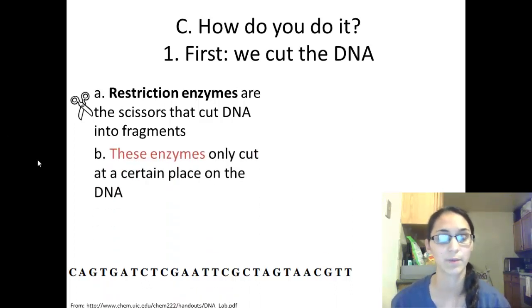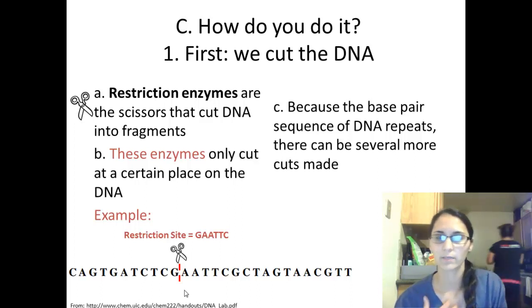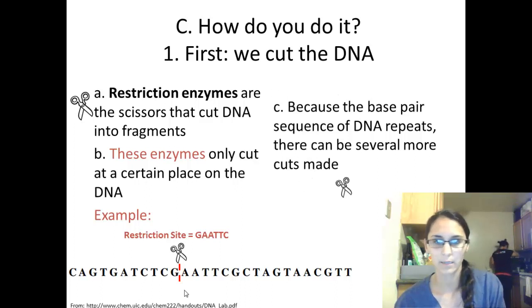These enzymes only cut at a certain place on the DNA. There's one particular place in the strand of DNA that they will cut. Sometimes they'll be two different places if they see a similar cutting site or restriction site. For example, in this strand of DNA here, if the restriction site or the cutting site is G-A-A-T-T-C, then the enzyme will travel along the DNA strand until it finds that site and it will cut it. Because the base pair sequence of DNA repeats, there can be several more cuts made in the strand.